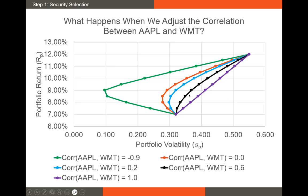I mentioned we want to diversify across assets with low correlations. The reason we have a curve instead of a straight line is that with non-perfect correlation between two assets, there's always going to be some diversification benefit. When Apple stock has a high return, Walmart might have a low return and vice versa — they moderate portfolio volatility. The lower the correlation between assets, the smaller the portfolio volatility we can achieve.